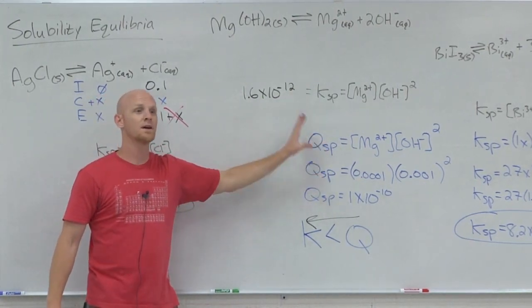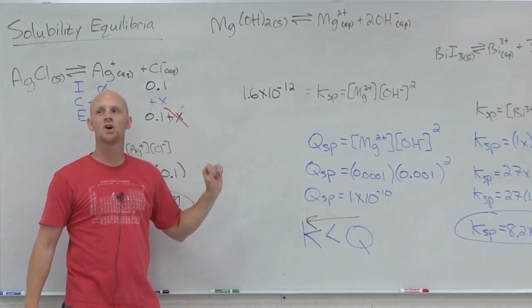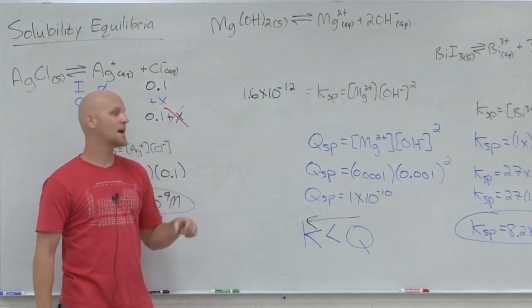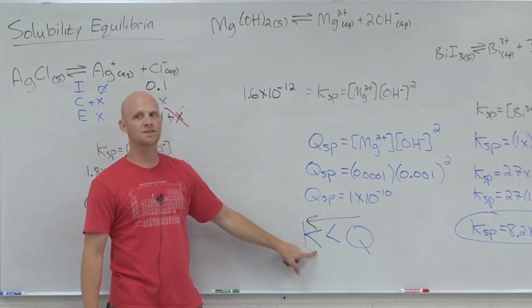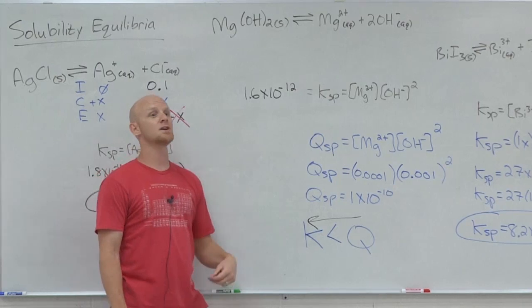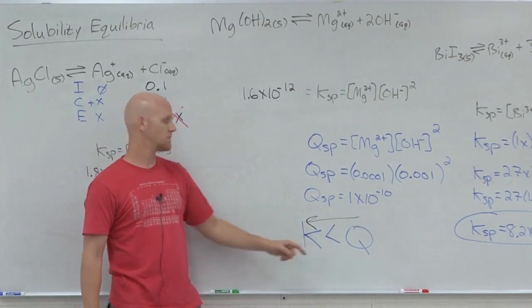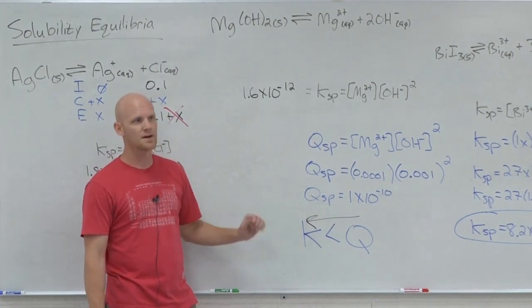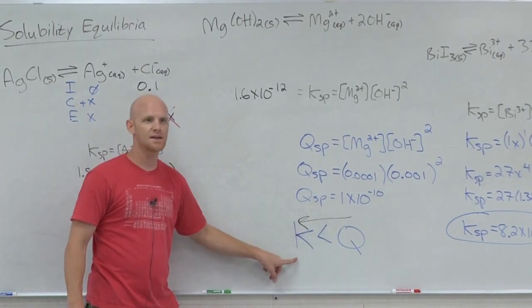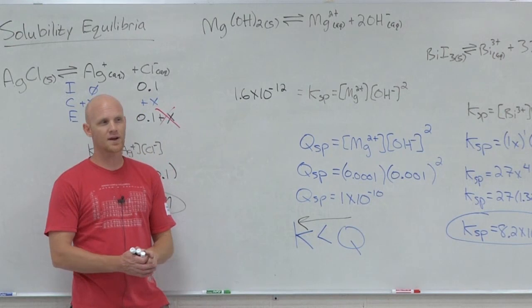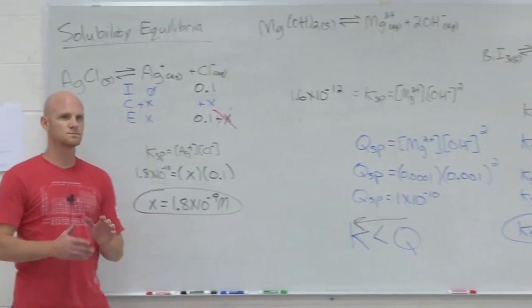So on a question like this, we just said, did the precipitate form? But you might get a question like this and give you all this data, and instead of saying did a precipitate form, it might say, which of the following is true? And it said, a precipitate forms because K is greater than Q. Is that true? Nope. A precipitate does not form because K is less than Q. Is that true in this case? No. We just figured out that a precipitate really did form, so that wouldn't be true. But why did the precipitate form? Because Q was greater than K. That would be the correct answer they'd be looking for.